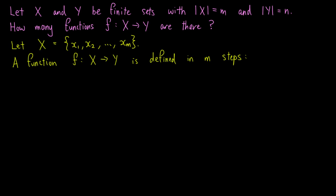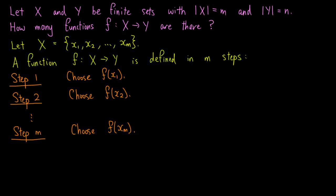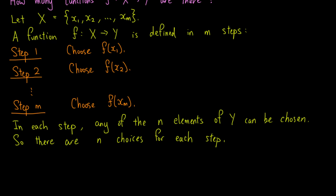A function f from x to y is defined in the following m steps. For step 1, we have to choose the value of f at x1. In step 2, we have to choose the value of f at x2. This goes on until step m, where we have to choose the value of f at xm. In each step, any of the n elements of y can be chosen, so there are n choices for each step.